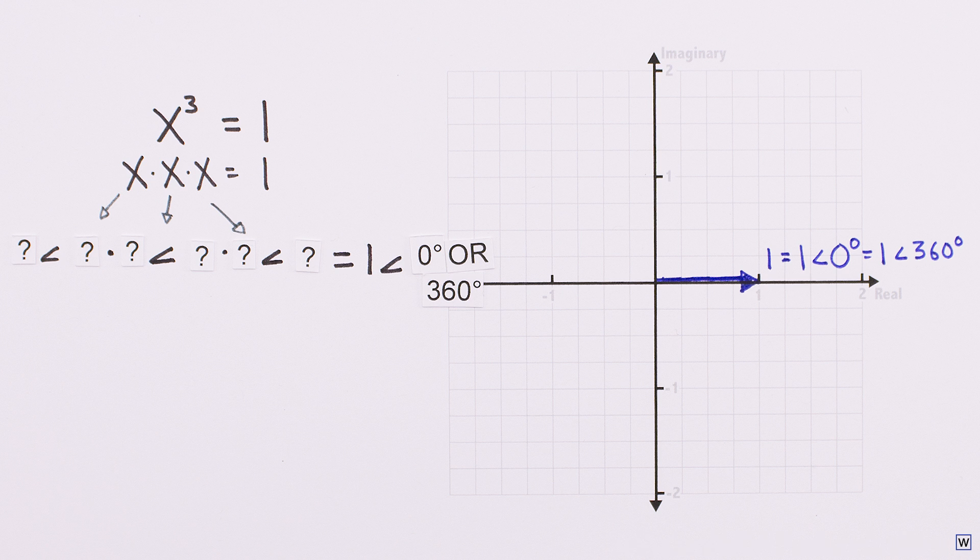Our result should have a magnitude of 1, and since 1 times 1 times 1 is 1, if we give each of our x's a magnitude of 1, our resulting magnitude will work out to 1. Easy.